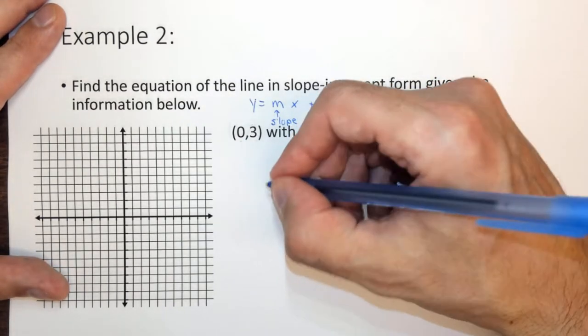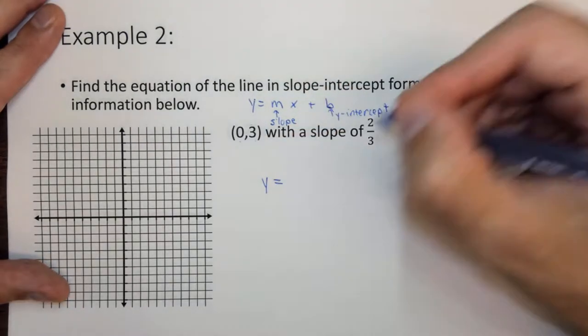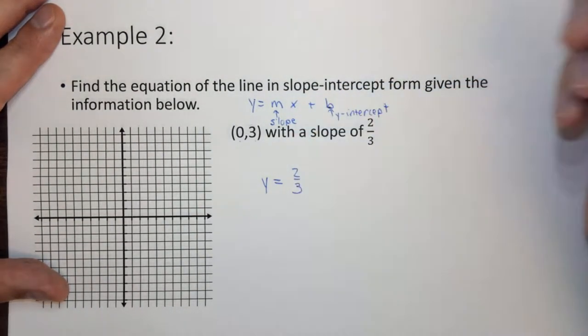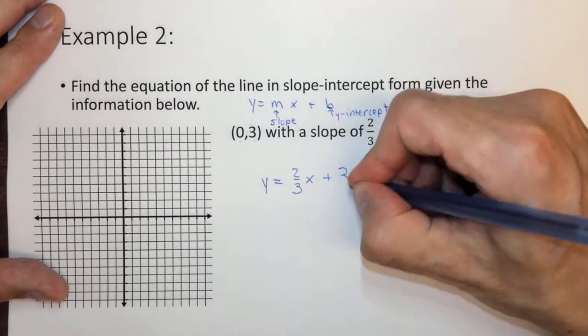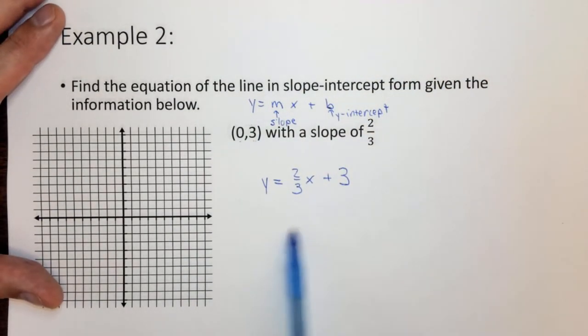So the equation of this line is simply y equals 2 thirds, which is m, x plus the y-intercept, 3. So this is how we find the equation of a line.